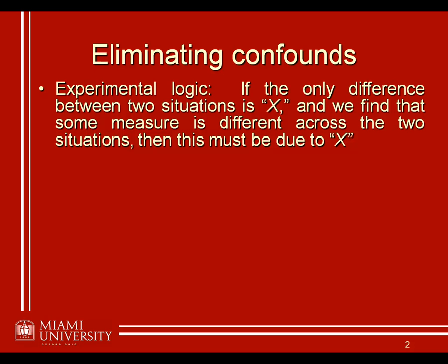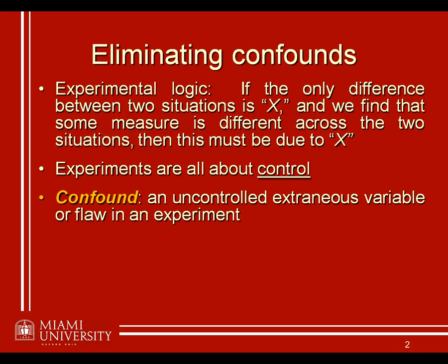What that requires us to do is make sure there is only this one difference between the two situations — the variable X in which we're interested. In order to ensure that, we need to have control over just about every other factor occurring in the experiment. When we talk about confounds, we're really talking about uncontrolled extraneous variables or flaws in design that introduce the possibility of some alternate explanation for differences in behavior observed — something that compromises the integrity of attributing the effect to just variable X.